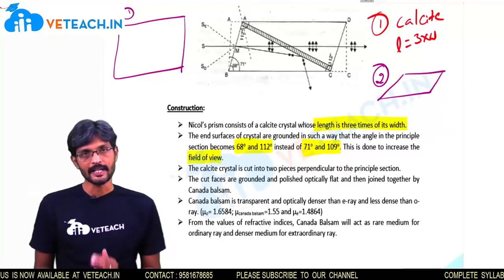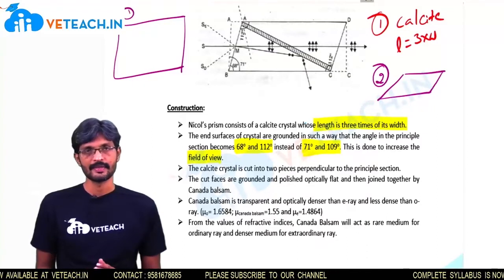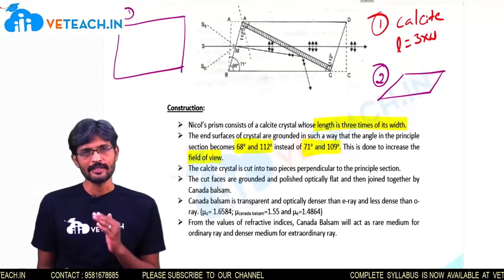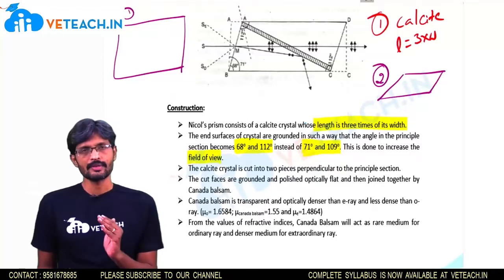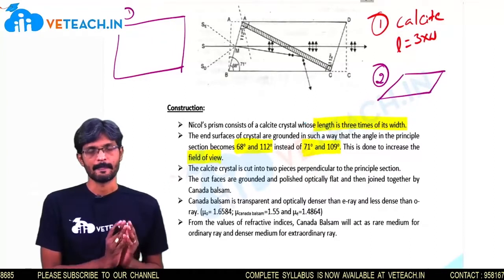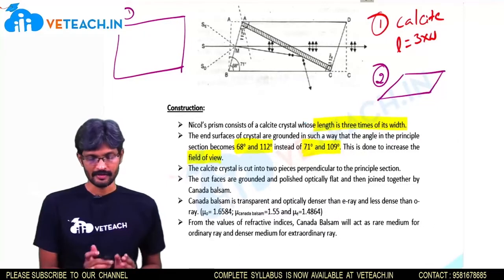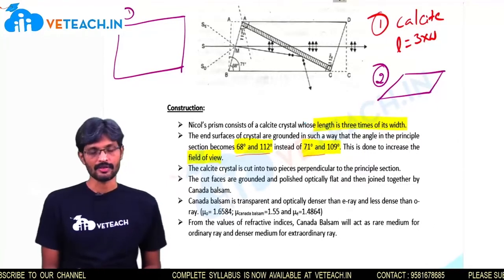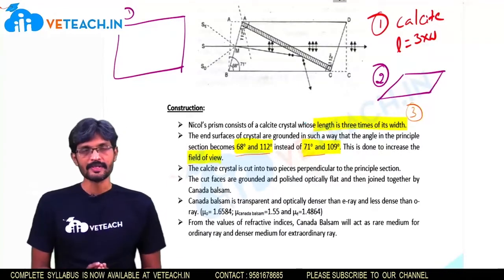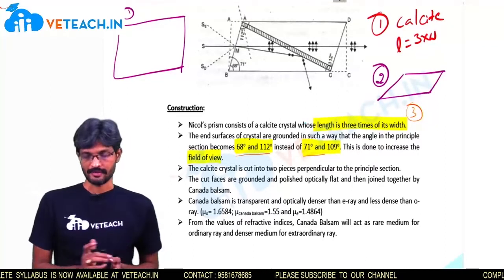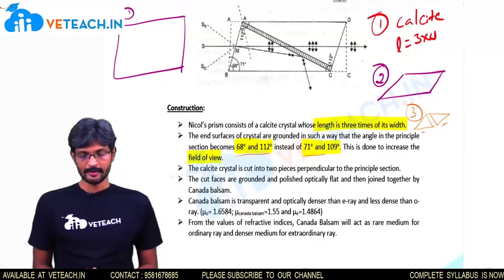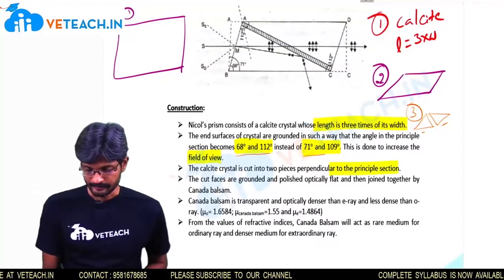The main aim of the construction is to eliminate the O-ray by total internal reflection. For total internal reflection, the angle of incidence must be greater than the critical angle. To achieve this condition, Nicol ground the end faces until the angles in the principal section reduced to 68 degrees and 112 degrees instead of 71 degrees and 109 degrees. In step three, the crystal is broken into two pieces perpendicular to the principal section.